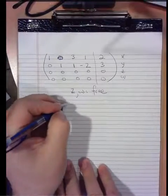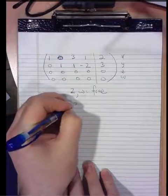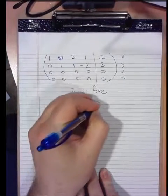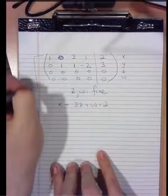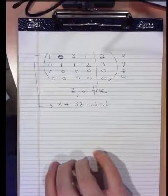Then from the top equation, we learn that x plus 3z plus w equals two, right? The coefficients in the top equation tell us that that,